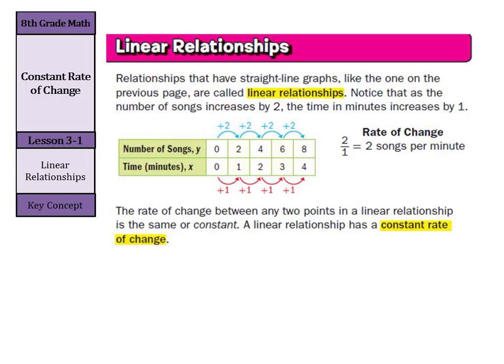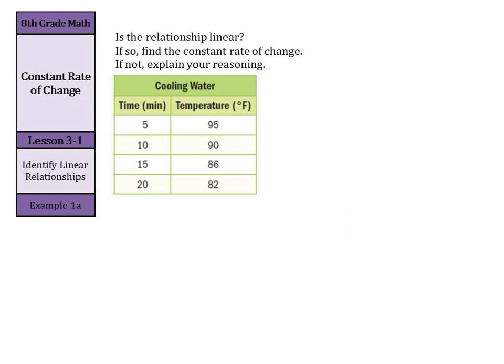Let's go on to our first example today. We're going to ask ourselves, is this relationship linear? If so, find the constant rate of change. And if not, explain our reasoning.